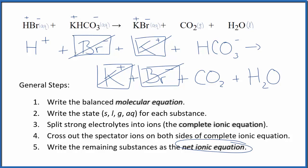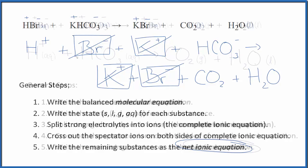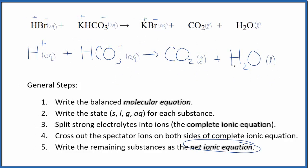What's left is the net ionic equation for HBr plus KHCO3. Writing this cleanly with states gives us our balanced net ionic equation for hydrobromic acid plus potassium hydrogen carbonate.